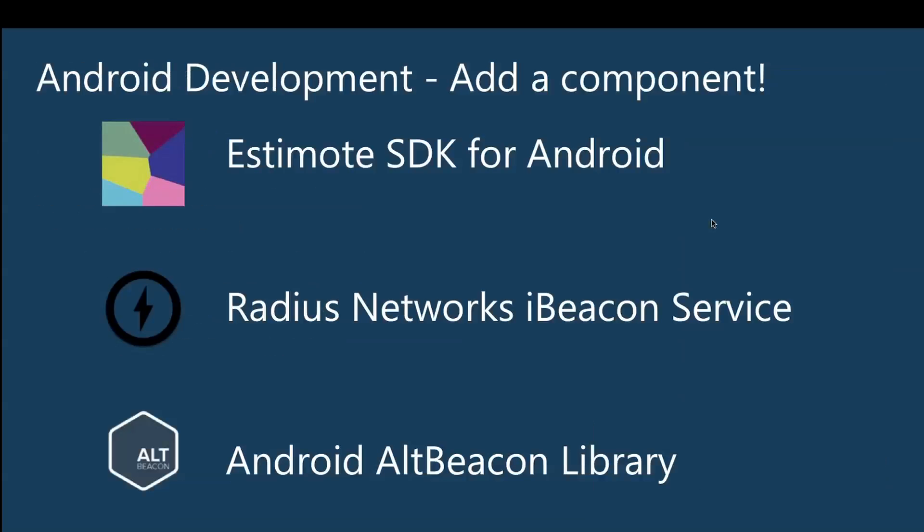You'll see I'm using the Estimote SDK for Android and also on Android Wear, because Android Wear devices — the actual watches — have Bluetooth low energy built in. You can run code right on the watch and actively scan for beacons on the watch, which is very cool. Since Android doesn't have core location but does have Bluetooth, developers and the beacon manufacturers created their own SDKs for Android. There's no iBeacon API built into Android itself. However, Estimote, Radius, and Alt have created libraries, and these are all available on the Component Store.